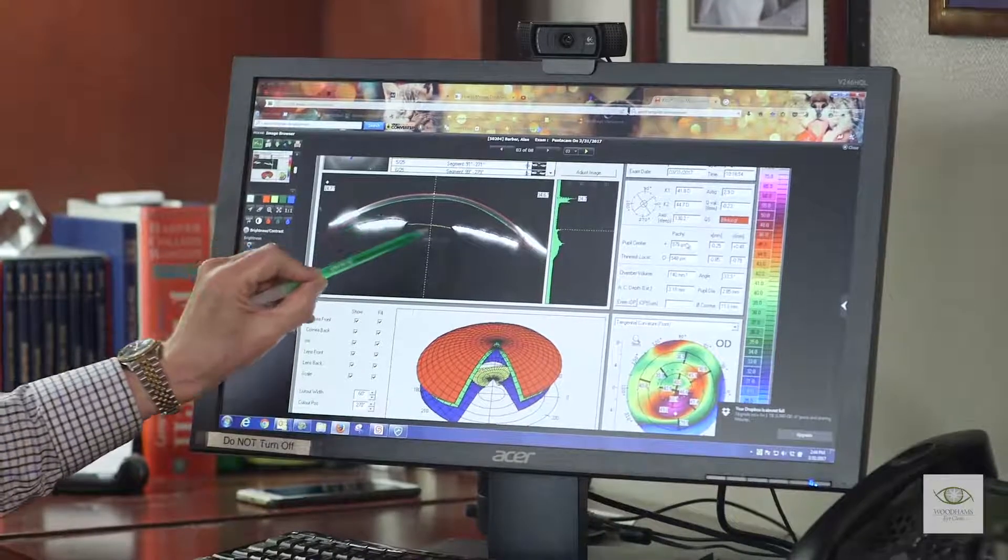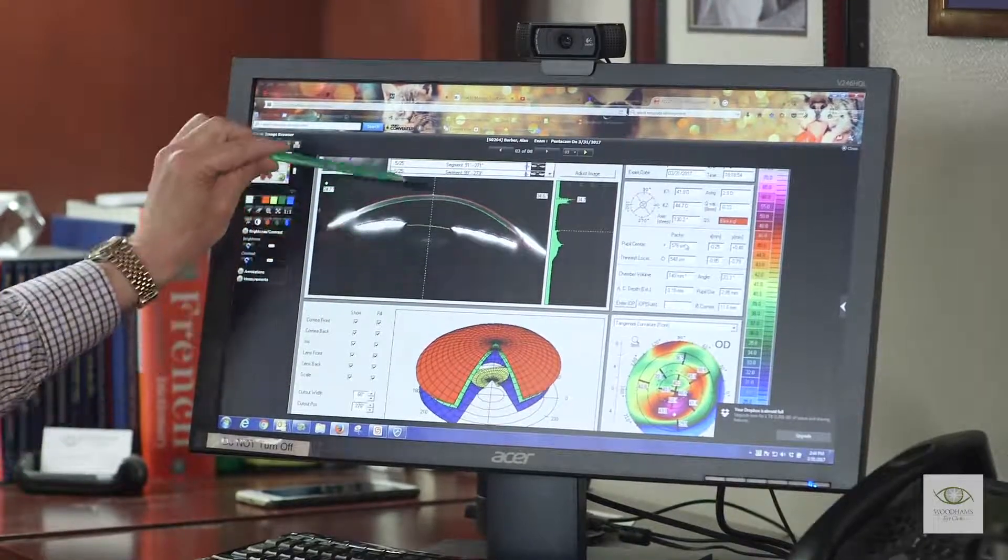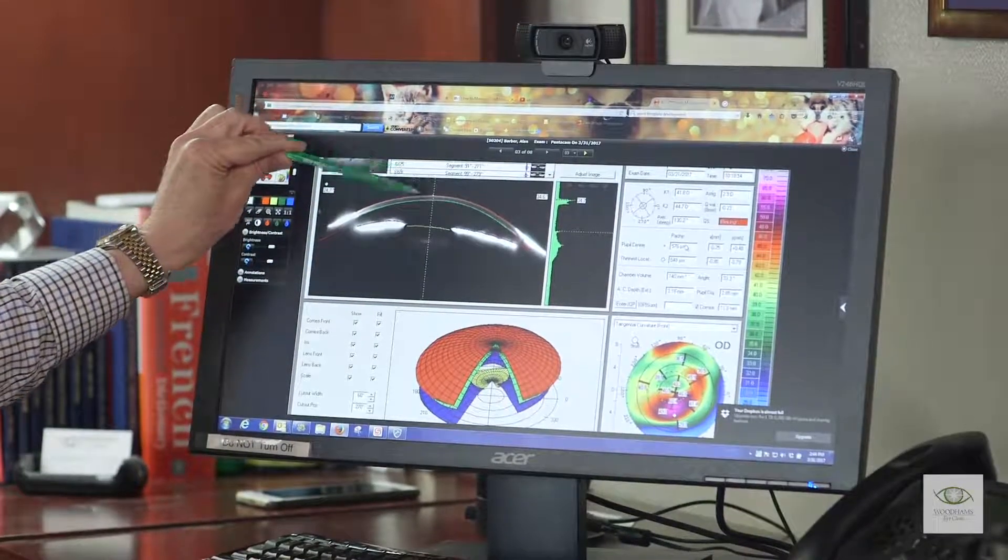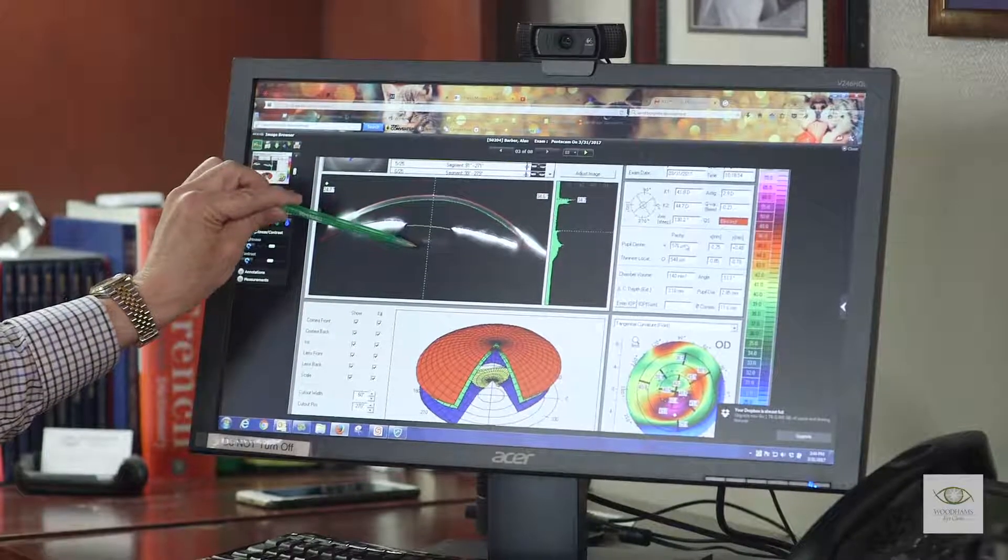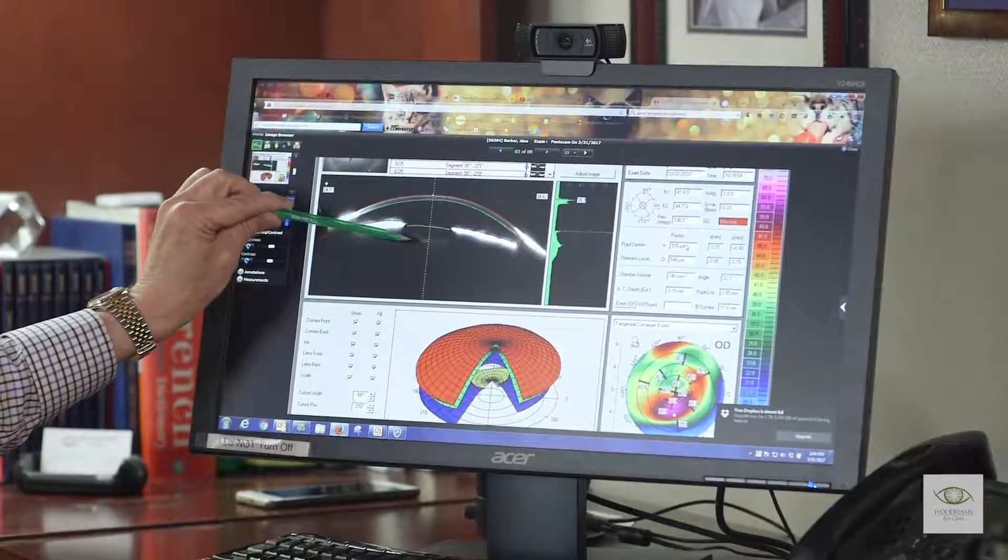The yellow line shows the pupil. This is a flash picture where the light goes through the pupil and hits the lens. If the lens were completely clear, you wouldn't see anything—it would be black.